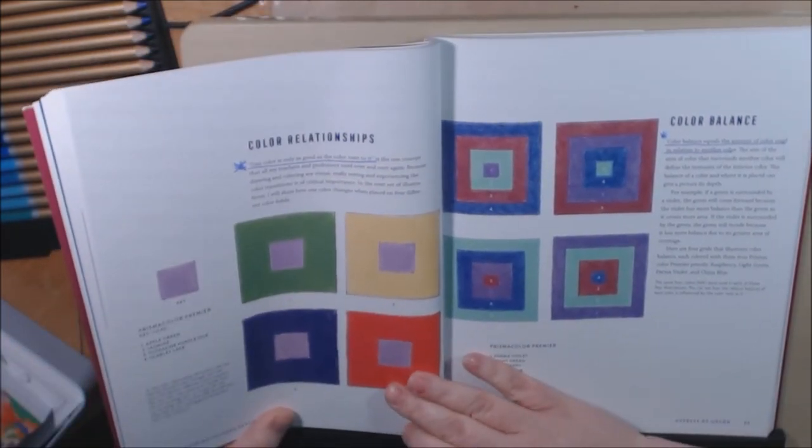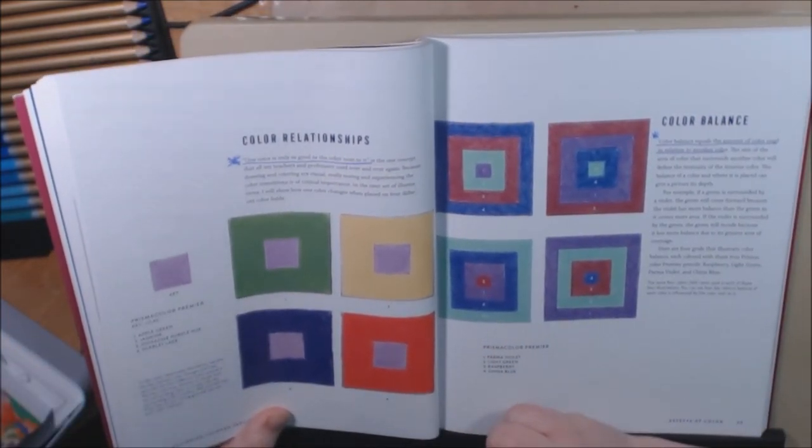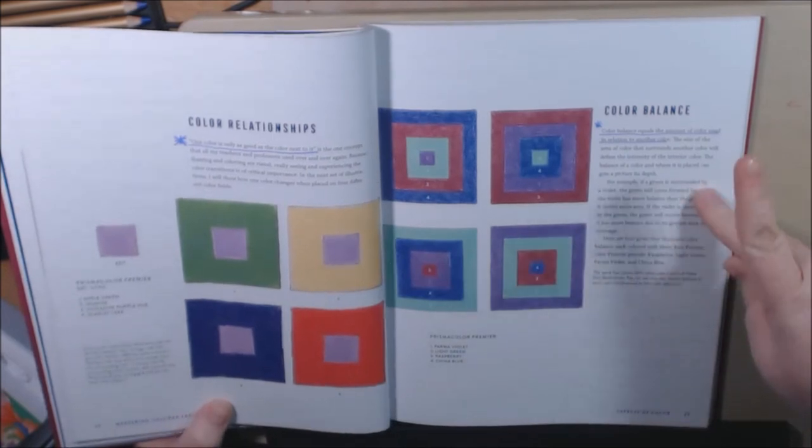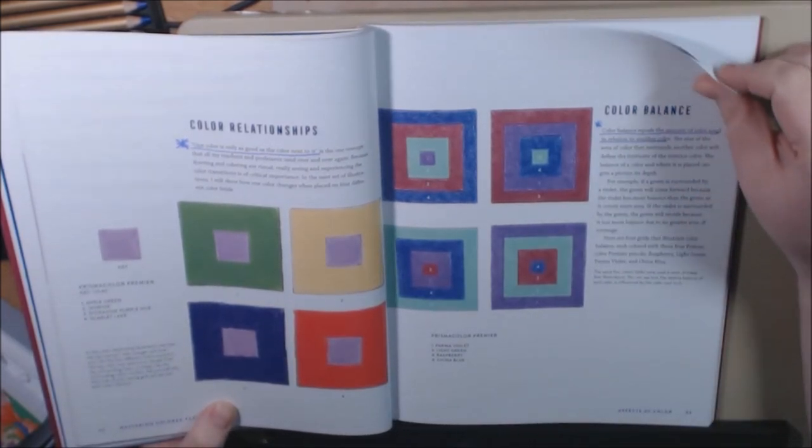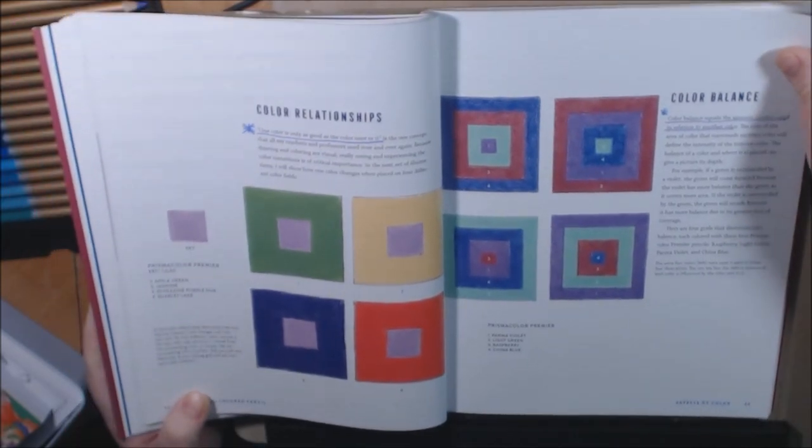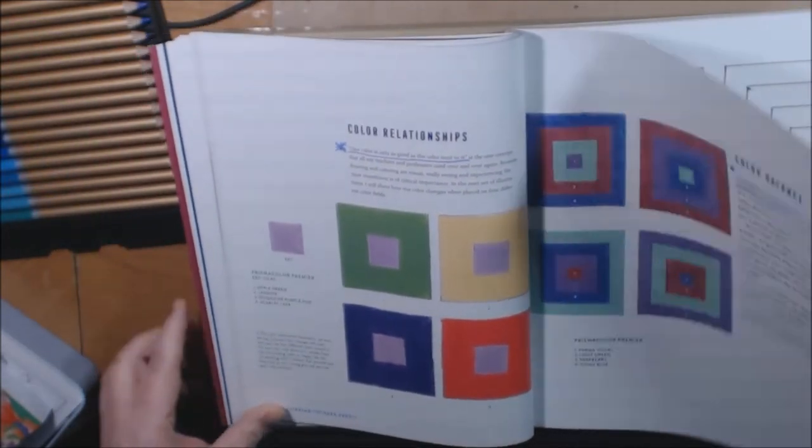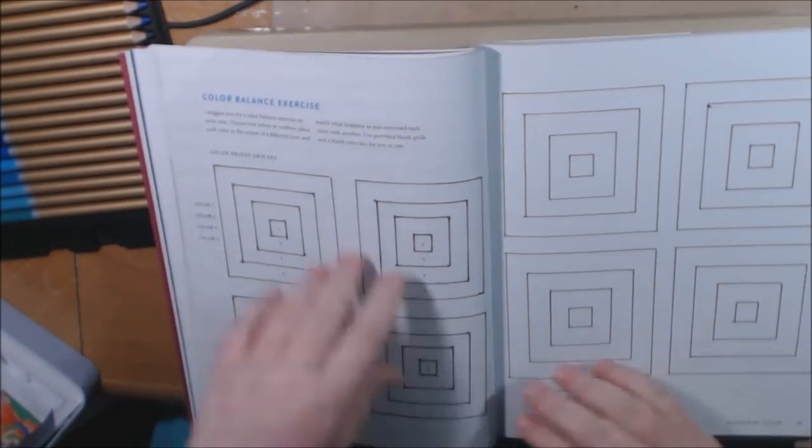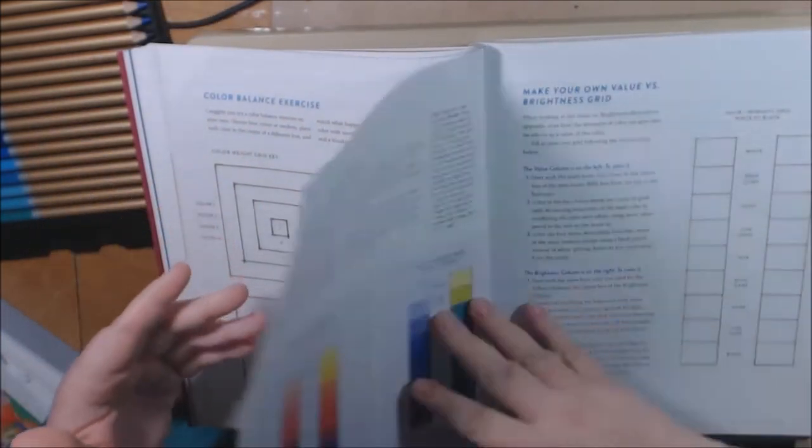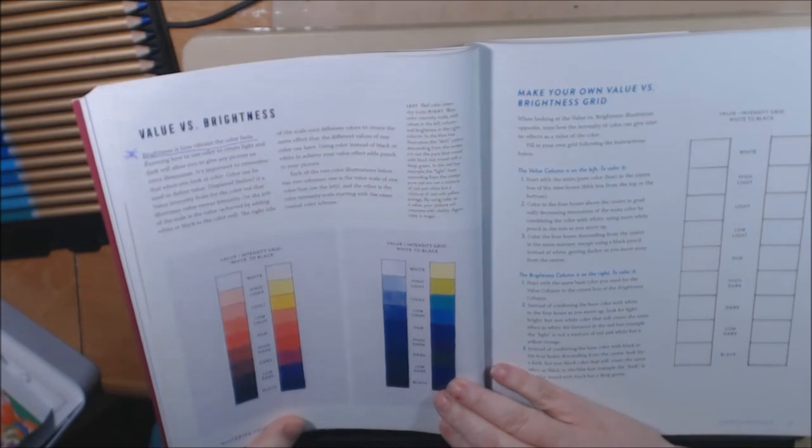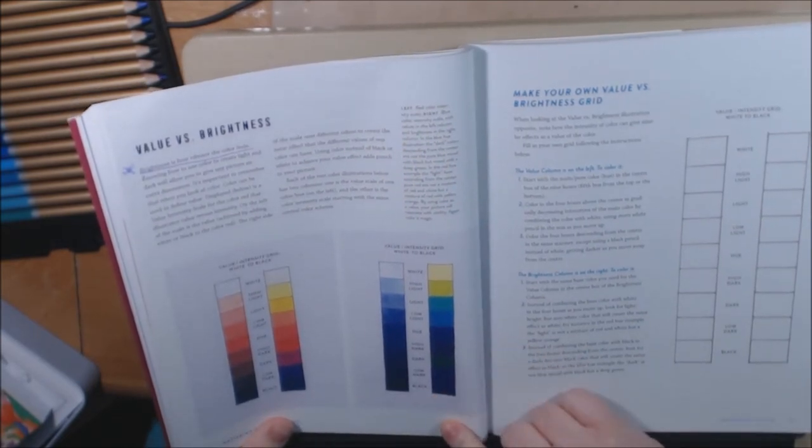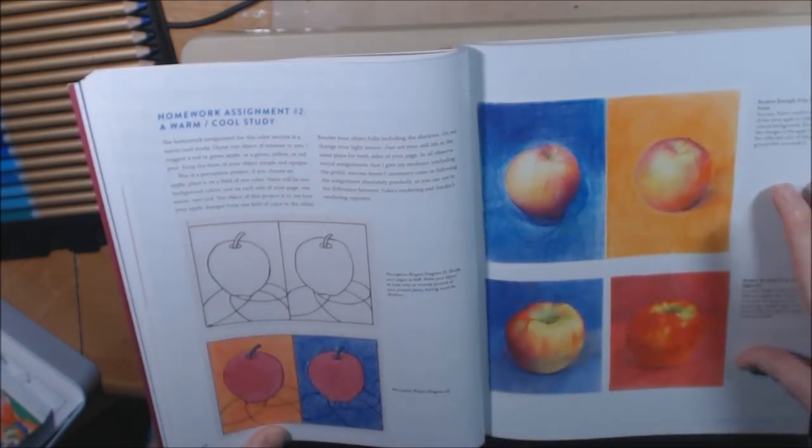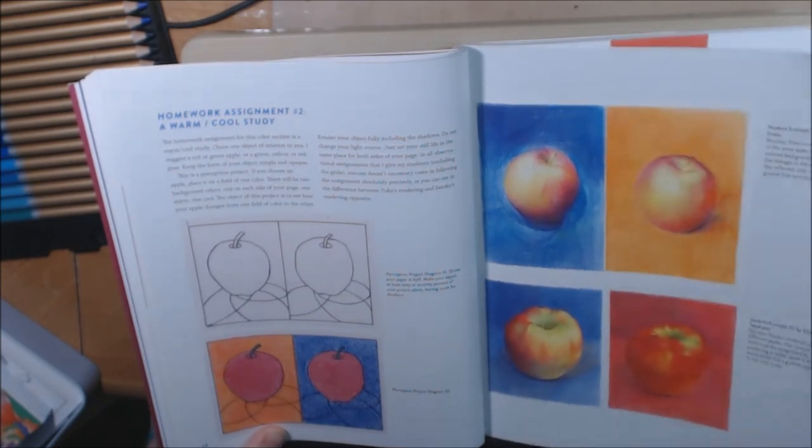And then we got the color relationships. The color is only as good as the color next to it. So she goes into detail here about the relationships of color and how they fit together. And then the color balance. Color balance equals the amount of color used in relation to another color. And that's these examples. And then right here you have your own places where you can do your own practice. Your different palettes. Your color balance palettes. See how they work together. And this section is value versus brightness. Brightness is how vibrant the color feels. Like, you can see the warms and the cools. Just depending on the background of the subject.